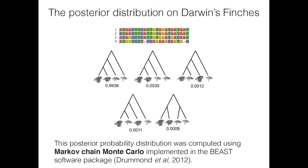You don't just get one tree as the outcome — you get a probability distribution over possible trees. Here's a tiny dataset of four Darwin's finches, and here are the five trees that have appreciable probability given this data. In this particular case, one tree has over 99% of the probability, so there's pretty strong evidence that this is the tree most likely to have produced the data under our model.